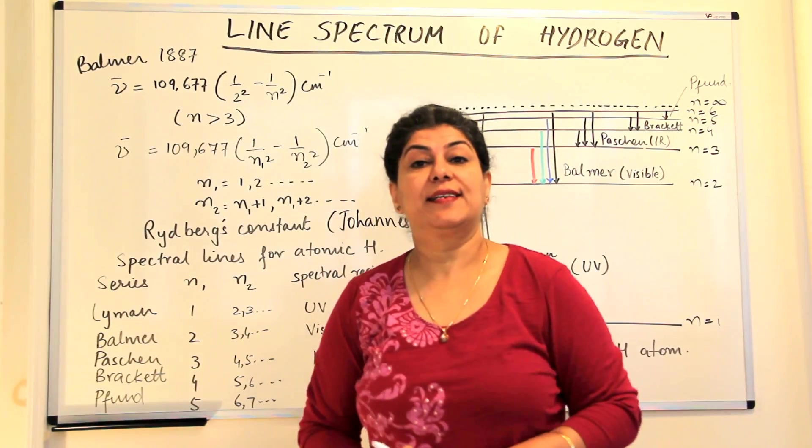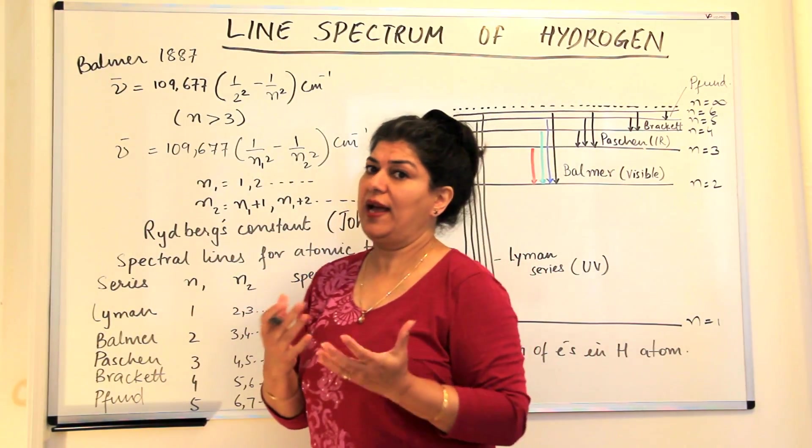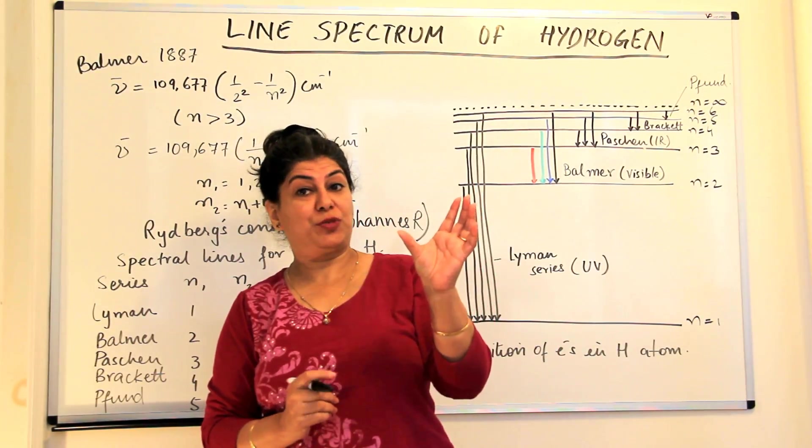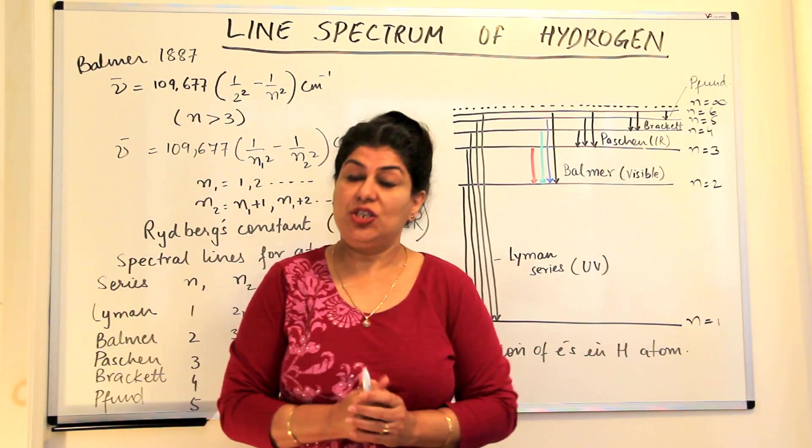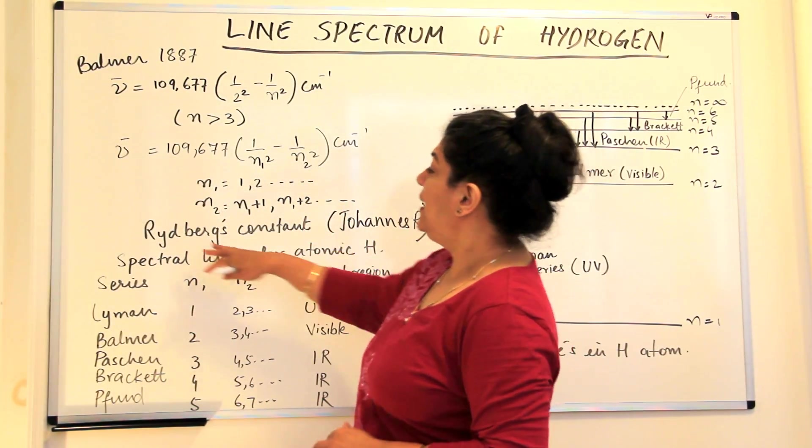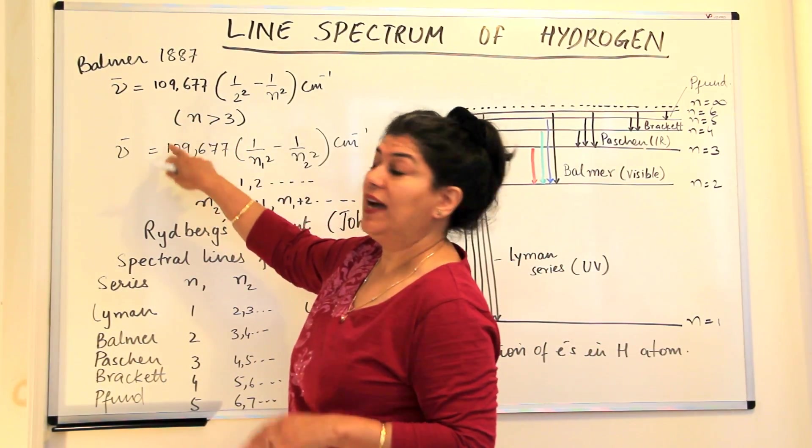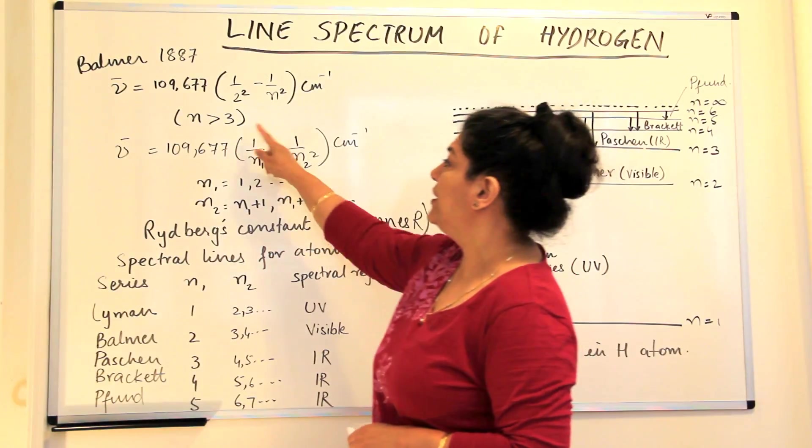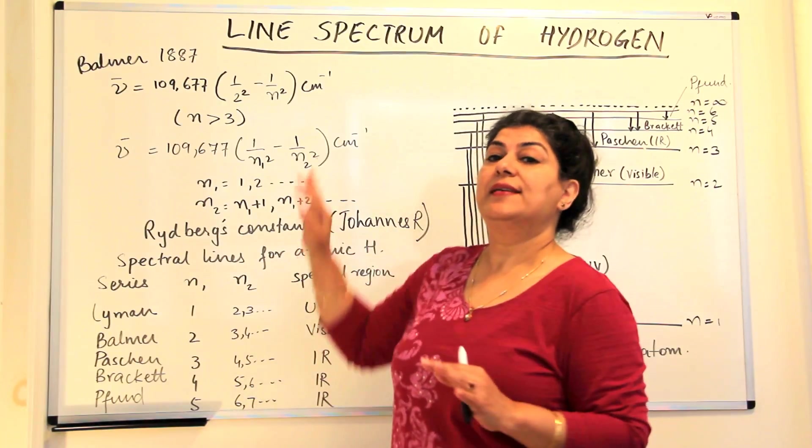Later, there was another scientist called Johannes Rydberg. Rydberg gave his own formula and said that he had found lines not only in the visible range of the spectrum, but also in the ultraviolet and infrared range. So after all these scientists who one by one were finding these, Rydberg modified the Balmer formula and said that wave number equals 109,677 × (1/n₁² - 1/n₂²) cm⁻¹.